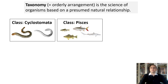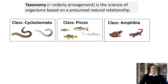Here is class Pisces — Pisces means fish. There are about 33,600 species of fish identified and described by scientists. Class Amphibia refers to double life, or life in water and on land. Salamanders, newts, frogs, toads, and caecilians are all closely related to each other and therefore combined in class Amphibia.